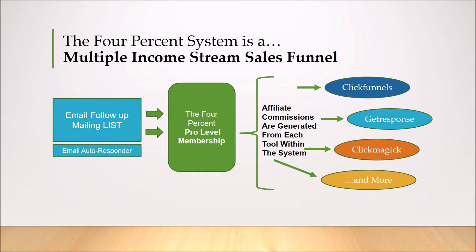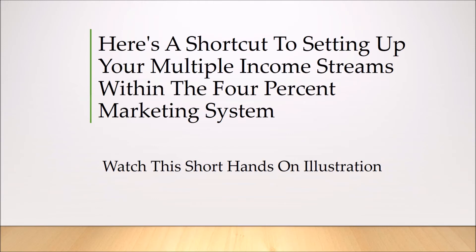Once you become a pro level member, the system is actually making you an affiliate of each one of these tools. When you sign up to ClickFunnels you get a 14-day trial, GetResponse gives you a 30-day trial, and ClickMagic is about $16-17 upfront. Once you sign up, you become an affiliate of each tool and you will get affiliate commissions generated from each tool within the system.